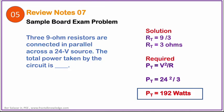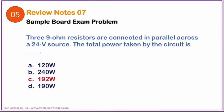Without any drawing, we can solve the problem. The total resistance is 9 ohms divided by 3 equals 3 ohms. The total power is V squared over R, which is 24 volts squared divided by 3 ohms, and the answer is 192 watts. From the choices given, our correct answer is letter C, 192 watts.